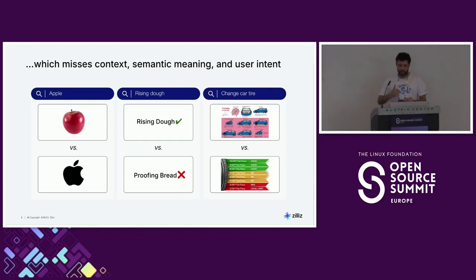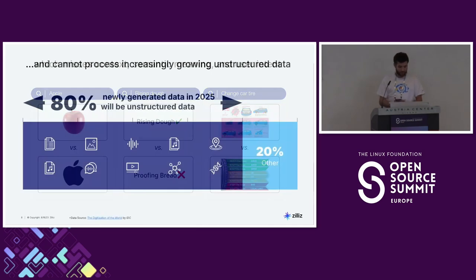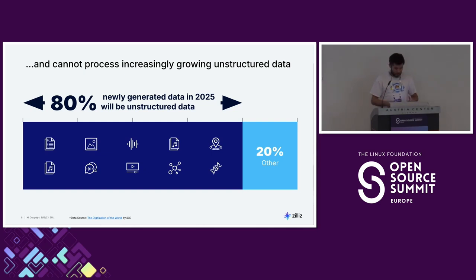You also miss the context, semantic meaning, or the user's intent. For example, if you search for 'Apple,' are you searching for the fruit or the company? If you search for 'changing car tire,' are you looking for when to change it or how to do it? That's basically why we have vector databases. Also, a lot of data is unstructured, meaning you have to run it through a deep learning model to understand it, and traditional databases can't do that.